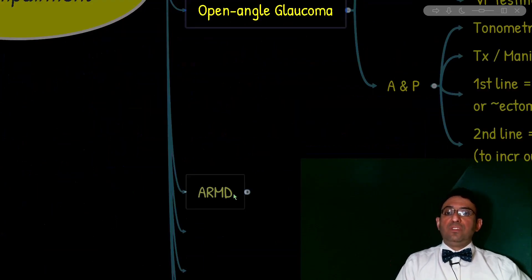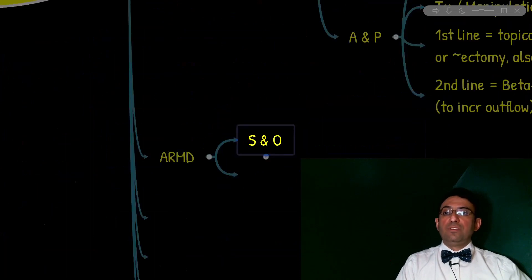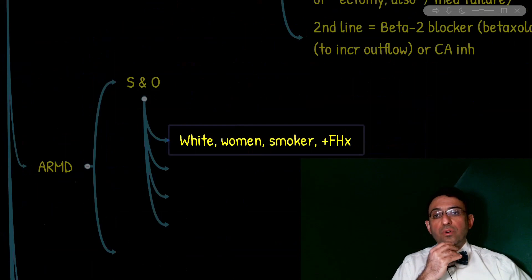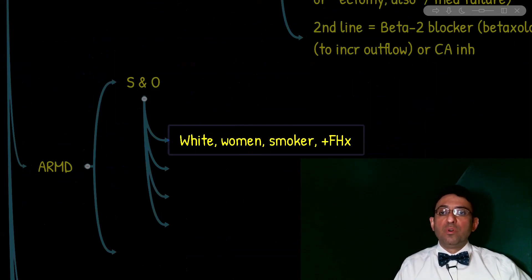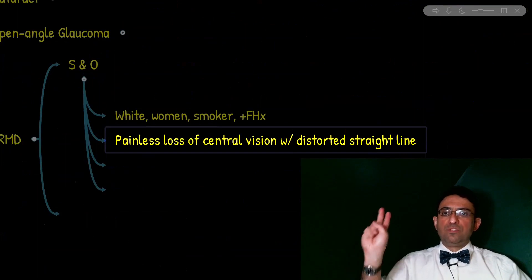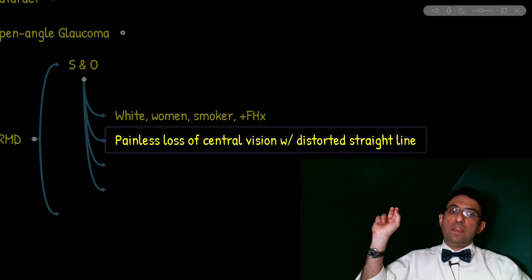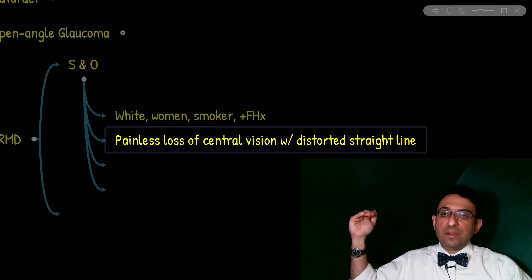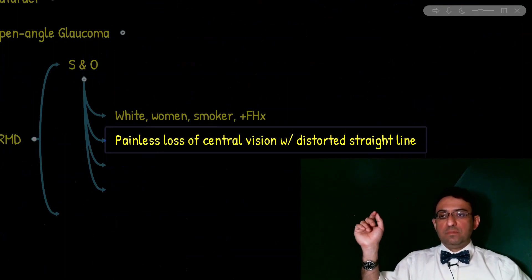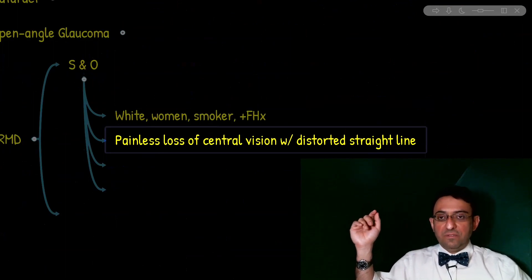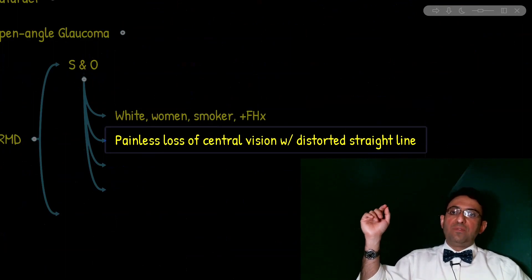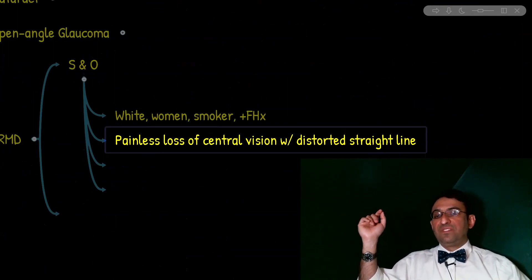Next on the differential list is age-related macular degeneration (ARMD). It is usually seen among white women or smokers, especially with a positive family history. The clinical findings to always remember are painless loss of central vision and distortion of straight lines. If you see those findings in a white female smoker with impaired central vision, think ARMD first.